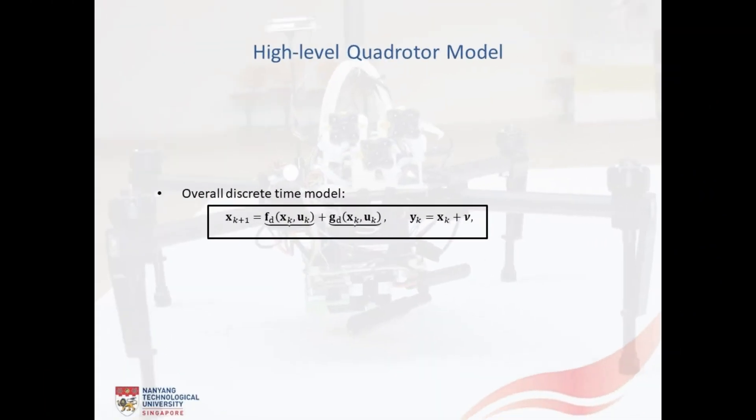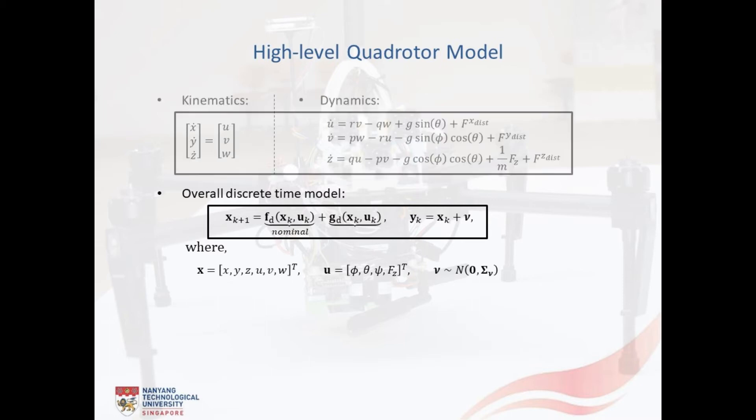Next, I present the high-level quadrotor model in its discretized form which is utilized in the NMPC design. Wherein, the state vector comprises of three translation positions and three translation velocities, the control vector includes the three attitude angles and the throttle command. In this work, we consider the overall model to be comprised of an a priori known nominal function FD and an unknown function GD. We have obtained the known function FD based on these equations which are obtained via the first principal approach.